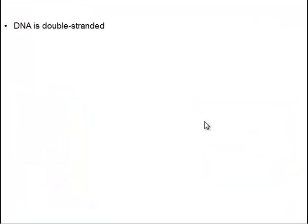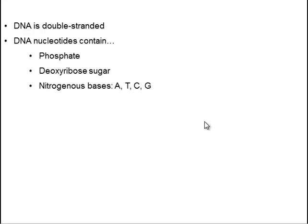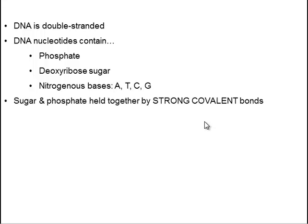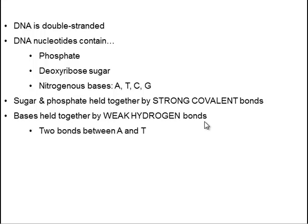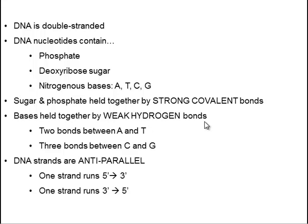So to sum up what we've seen so far, DNA is double-stranded. Each of its nucleotides has a phosphate, deoxyribose, and these four bases: A, T, C, G. The sugar and phosphate are held together by strong covalent bonds, whereas the bases are held together by weak bonds. There are two hydrogen bonds between A and T, three between C and G. And DNA strands are anti-parallel. One strand runs five prime phosphate to three prime sugar. The other strand runs three prime sugar to five prime phosphate.